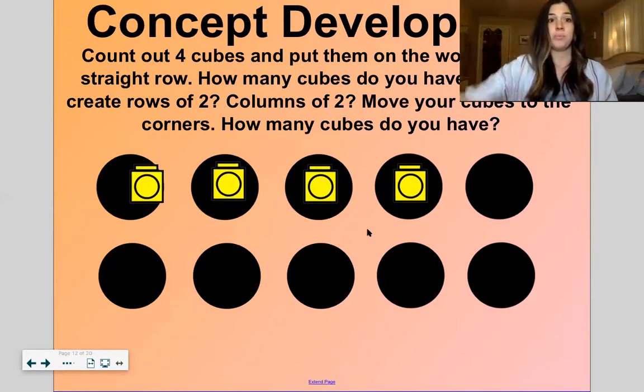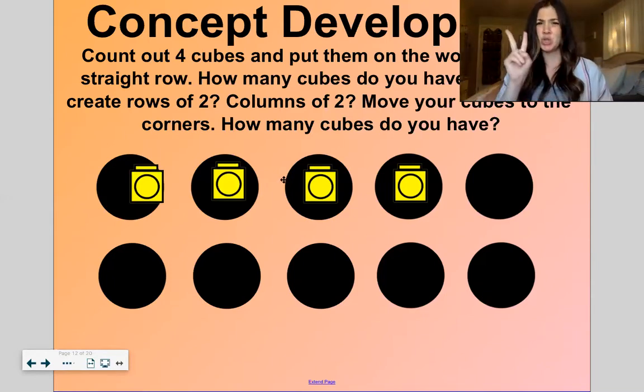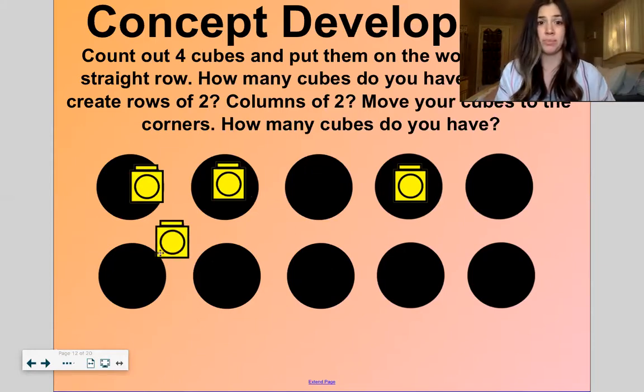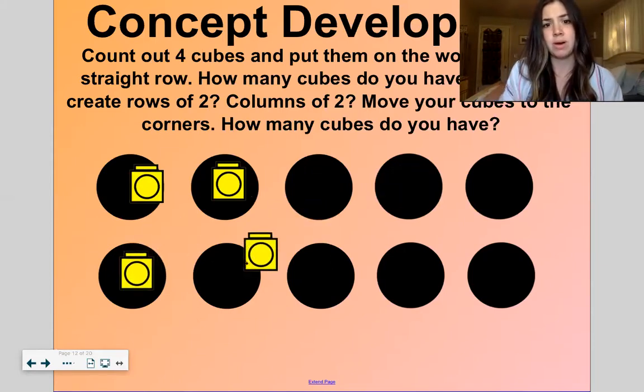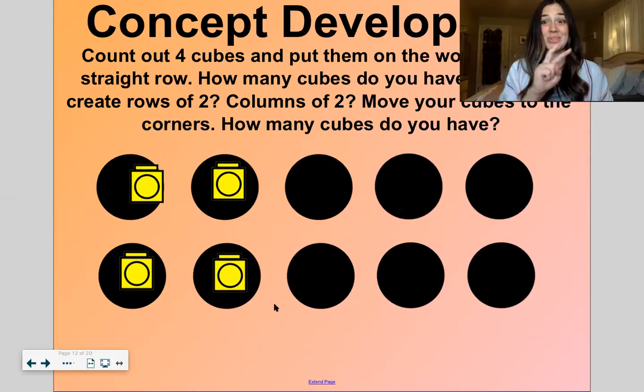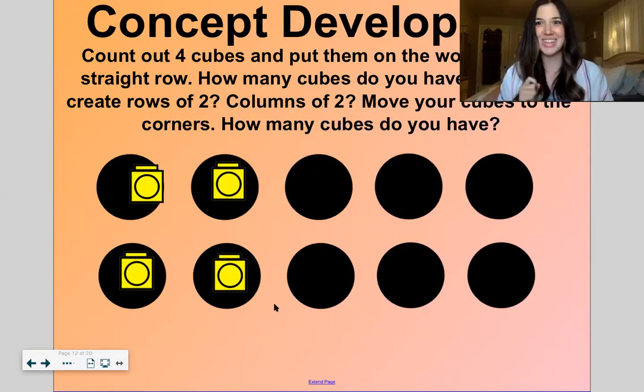Horizontal is a row. Can we create two rows of two? Okay so that means I need to have two on top and two on bottom. So I'm going to move two on bottom here. There we go. Two on top, two on bottom. Two and two make four. That's our double fact. Two and two make four.